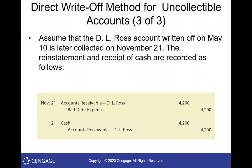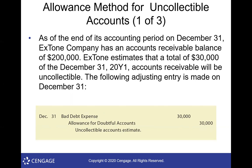Every once in a while, somebody whose debt you've written off will call and say they can finally pay you. You don't just say 'don't worry about it.' What you do is reinstate the debt and then receive the payment. Reinstating is just the reverse of the write-off: debit accounts receivable, credit bad debt expense. Then to show receipt of payment, debit cash and credit accounts receivable.